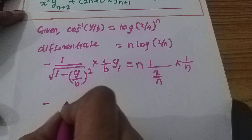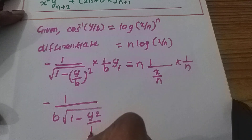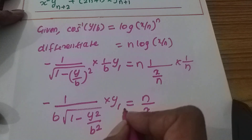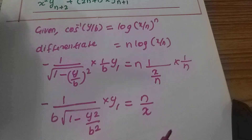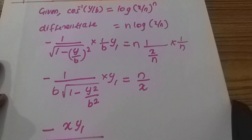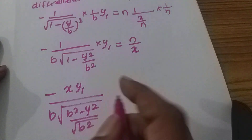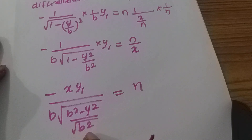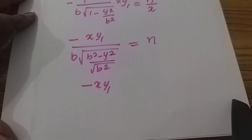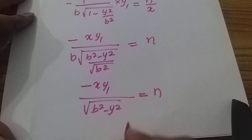Applying chain rule gives 1 by n constant. After simplification, minus xy1 divided by root b square minus y square is equal to n. Root b square outside, b will cancel. So minus xy1 divided by root b square minus y square is equal to n.